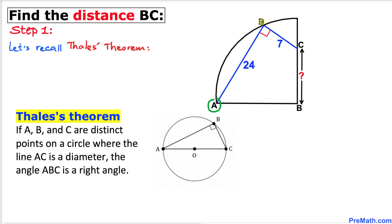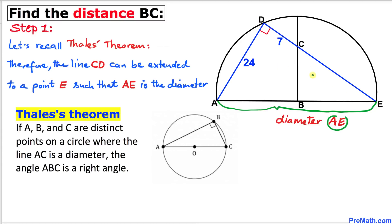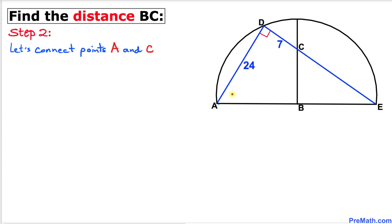We can see that points A and D are two points on the circle such that this angle is 90 degrees. Therefore, line CD can be extended to a point E that is also on the circle, such that line segment AE is the diameter of this semicircle. Our next step is to connect points A and C.